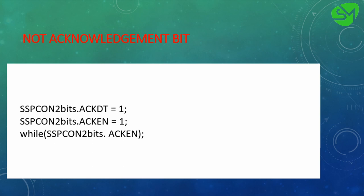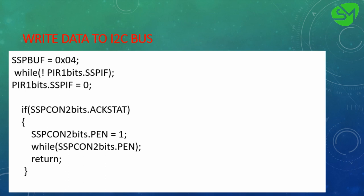That covers the initial programming sequences. For the write data sequence, we assume we are writing a value such as 0x04 to the I2C bus. After writing, we wait for the SSPIF flag to go high — that flag is raised automatically once the data is successfully loaded to the I2C bus. We then clear that flag and check the ACKSTAT bit from the SSPCON2 register.